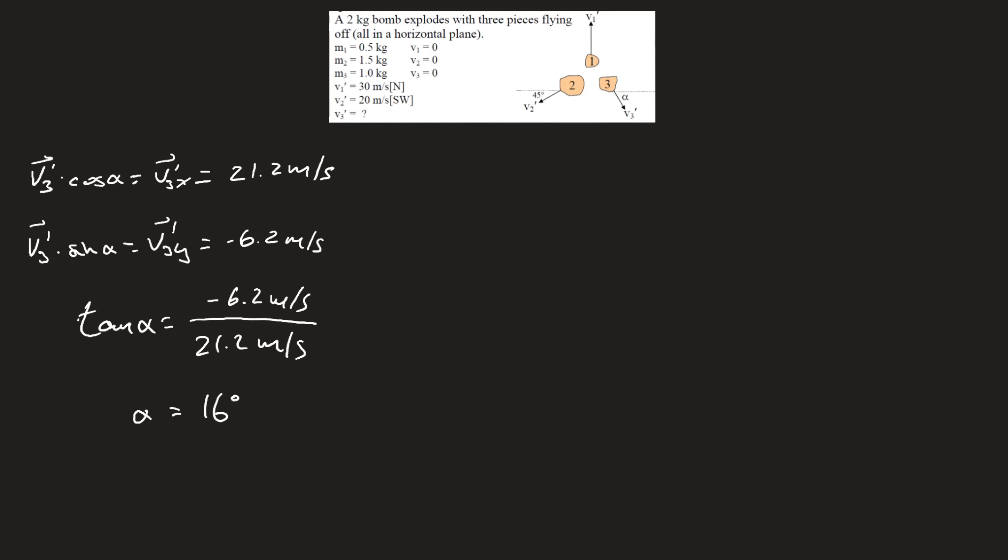Now that we have that value, we can plug it back into any of the two equations from the top. So v3 prime times cos alpha equals 21.2, which means that v3 prime is equal to 21.2 divided by cosine of 16. This leaves us with a v3 prime value of 22 meters per second.